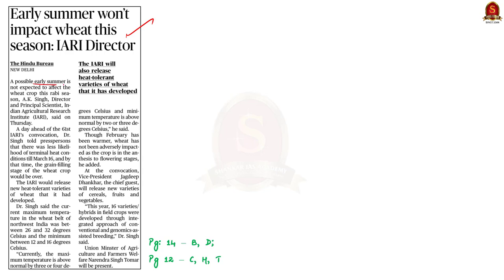This article says that an early summer is expected this year and according to the Indian Agricultural Research Institute, this early summer will not affect the wheat crop this Rabi season. This is because the terminal heat conditions will not be there till March 16, 2023, and by that time the grain filling stage of the wheat crop would be over.